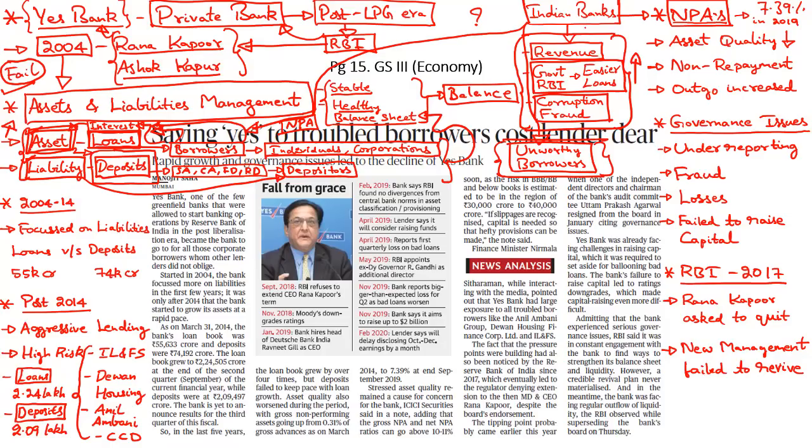In the recent past, we have seen many such cases in India. First, we had the fall of the Punjab and Maharashtra Cooperative Bank where innocent depositors lost their money. Next, we saw the collapse of IL&FS, which is a major player in the infrastructure financing sector. And now, we have witnessed the collapse of Yes Bank. In all three cases, the major contributor was corruption, fraud, and mismanagement on the part of the bank.